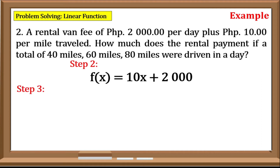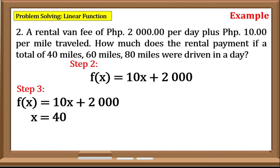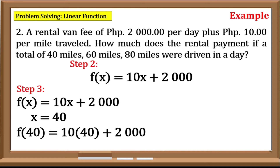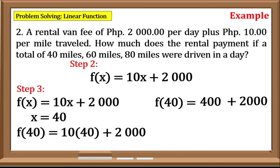Step 3: Evaluate the generated function. We have f(x) = 10x + 2000. Our x is equal to 40, so we need to evaluate the given value of x in our function. We have f(40) = 10 times 40, plus 2000. Simplify: 10 times 40 equals 400, plus 2000, that is equal to 2400.